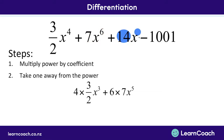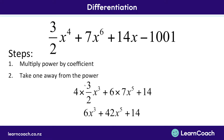Next we've got 14x to the power of 1, which just leaves us with 14 — x to the power of 1 goes down to 0 so that x cancels itself out. Finally, the constant 1001 is cancelled out because it's already x to the power of 0, and 0 times 1001 is still 0. Now we simplify: 4 times 3 is 12, divided by 2 gives 6x to the power of 3; then 6 multiplied by 7 is 42; and we still have our 14 on the end. That is your simplified differentiated expression.